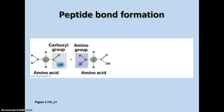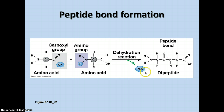Here's an example of how protein bonds form. We have a carboxyl group of one amino acid on the left and the amino group of another amino acid on the right. The hydroxyl part of the carboxyl group joins together with one of the hydrogens on the amino group in a dehydration reaction to make water and connect the two amino acids, forming what's called a dipeptide — made of two amino acids joined by a peptide bond.